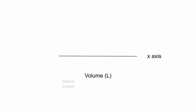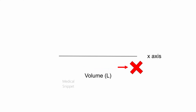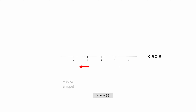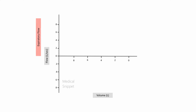Let's plot the graph. The volume in liters is plotted along the x-axis. Normally we plot volumes in liters along the x-axis in ascending order, but here the volume is plotted from right to left. Flow rate in liters per second is plotted along the y-axis. The part of the y-axis above the x-axis marks the expiratory flow limb, and the part below the x-axis is the inspiratory flow limb.